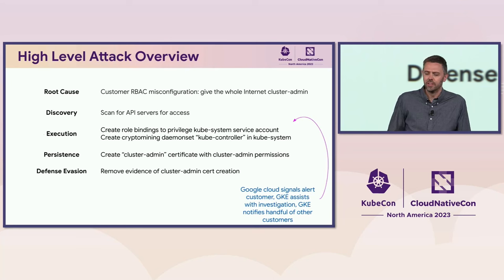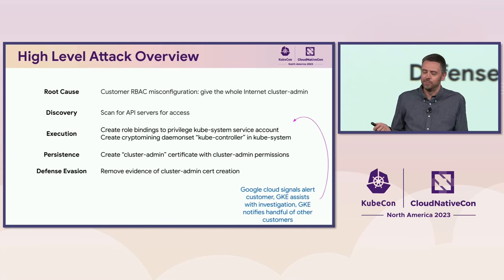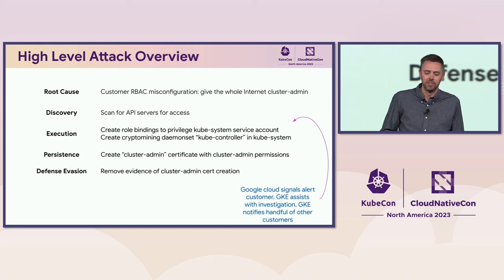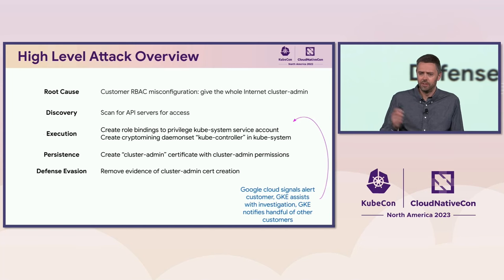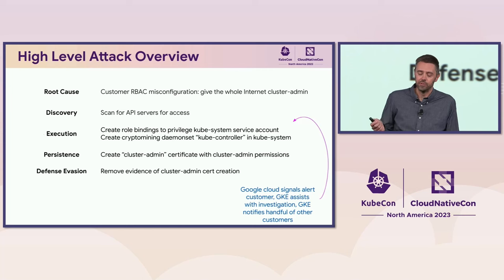A quick high-level overview of the attack: the root cause was a customer RBAC misconfiguration that effectively gave the whole internet cluster admin. You might say you'd never do that, but if you're Googling for access control advice and find pages giving bad advice, there are definitely pages that will tell you to create this binding. The attacker was scanning for this misconfiguration, found it, created access to control the cluster, and covered their tracks. Google Cloud signals detected the crypto miner activity, alerted the customer, helped with the investigation, notified a handful of other affected customers, and we now prevent this by default.